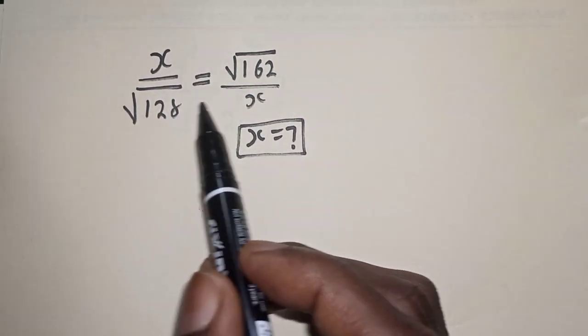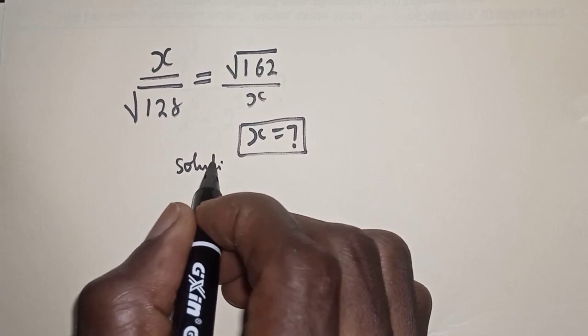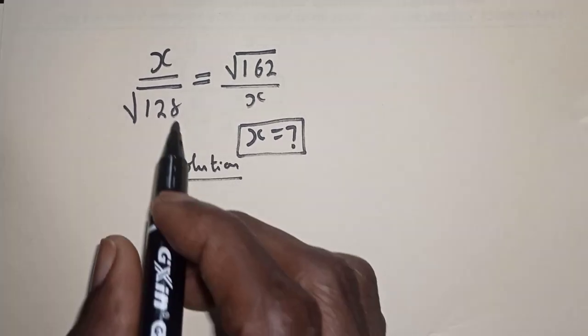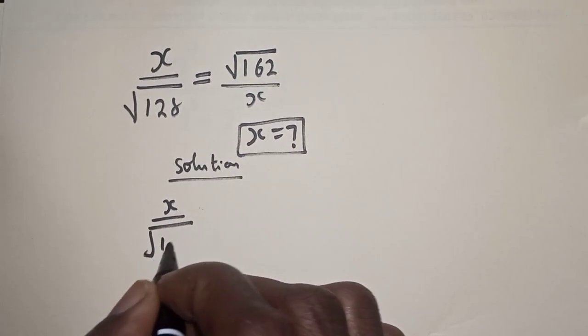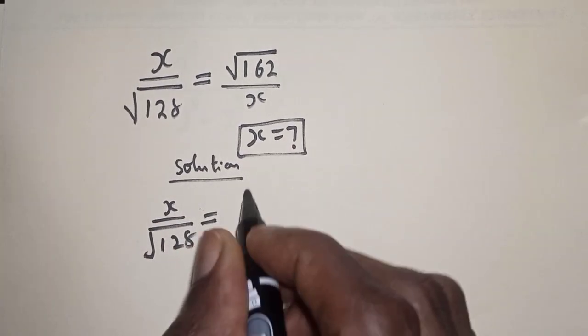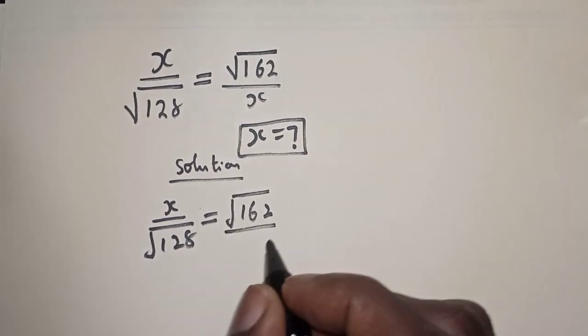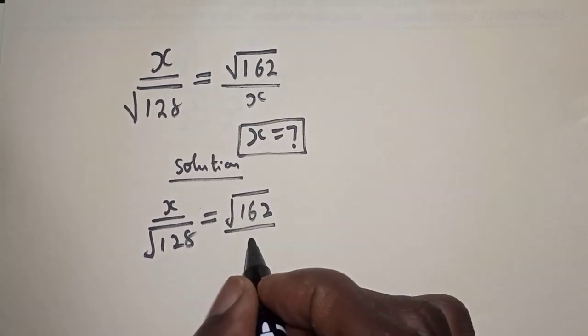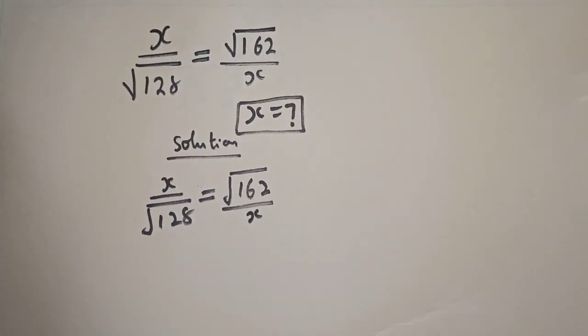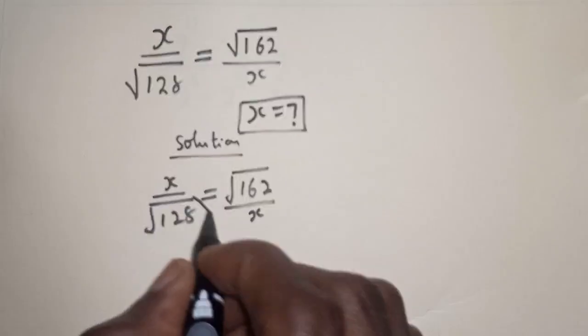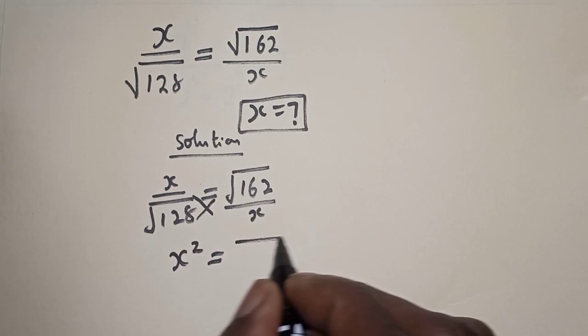Like, share, comment, and subscribe. Solution: we have the given equation x over square root of 128 is equal to square root of 162 over x. Now let's cross multiply. That is x squared is equal to square root of 128 multiplied by 162.